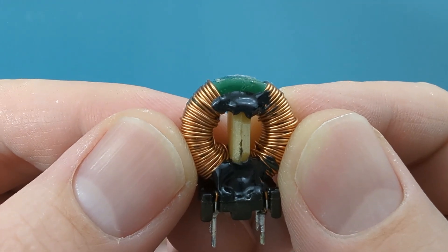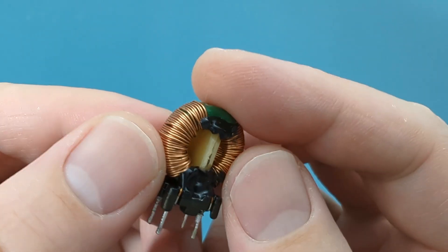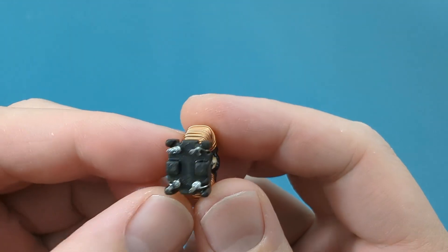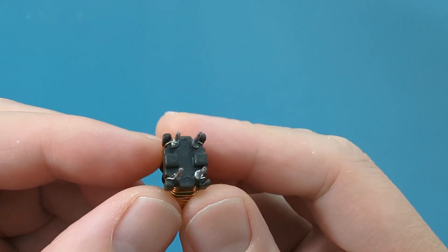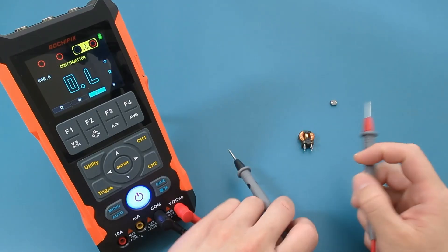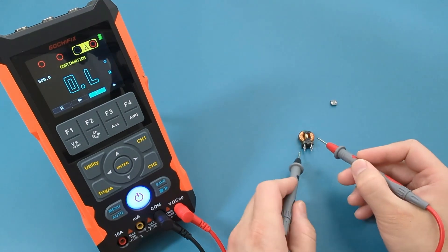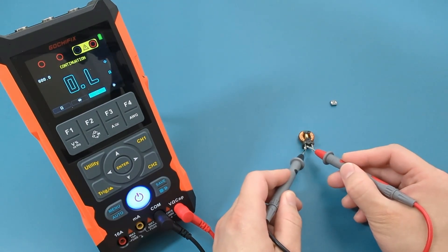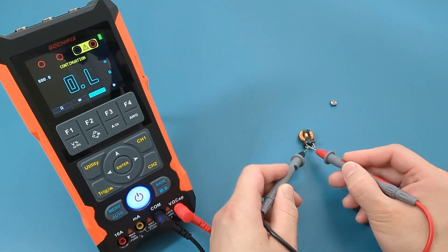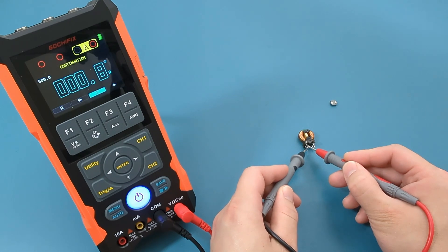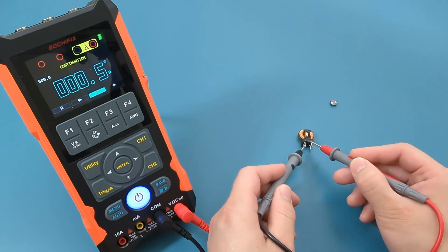The second inductor is a winding inductor. There are four terminals at the bottom. Test the front two terminals and then the last two terminals. When you touch the probes to the front two terminals you should hear a beep. The resistance is very low, which is a good sign.